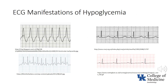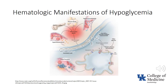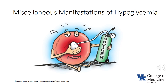ECG manifestations include ventricular tachycardia, atrial fibrillation, prolongation of the QT interval and corrected QT interval, flattened T waves, and ST-segment depression. Hypoglycemia can also result in increased factor VII, platelet activation, and neutrophil activation. Increased oxygen consumption and diaphoresis are common manifestations of hypoglycemia.